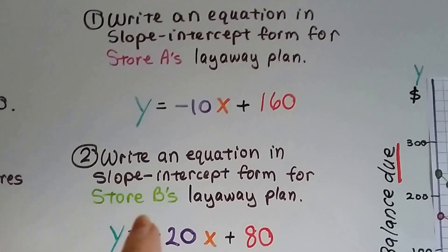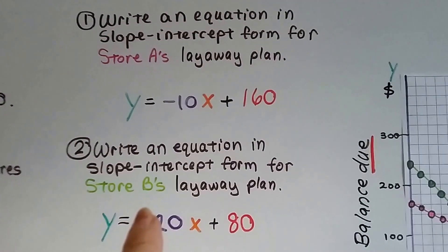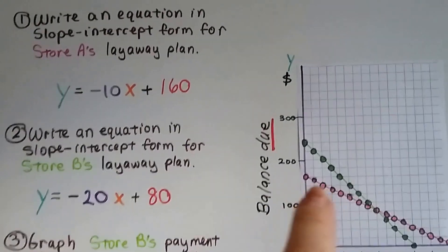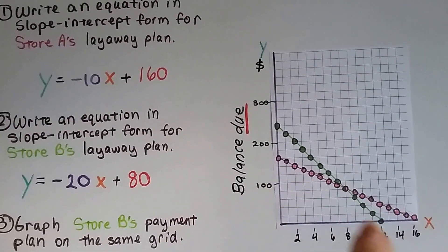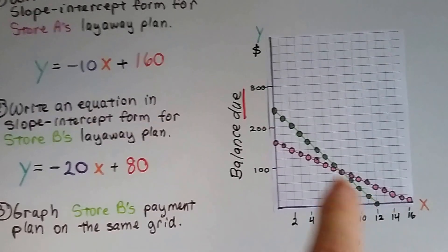We write an equation in slope intercept form for store B's layaway plan.